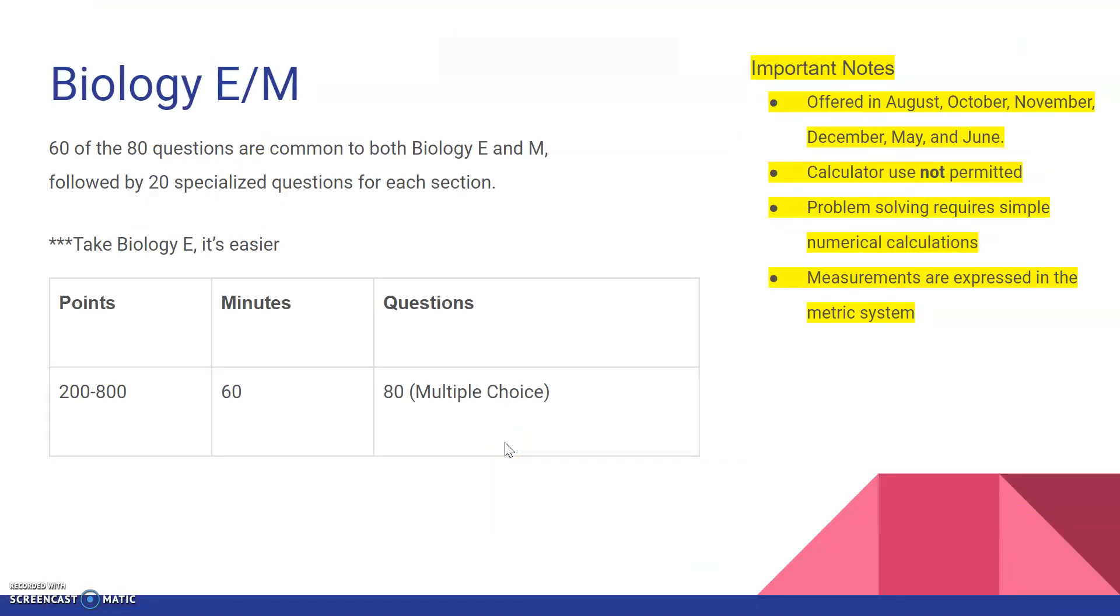Let's start with biology exam. So it's called biology E slash M. There's 80 questions in total, multiple choice. You got 60 minutes. 60 of the 80 questions are common. So they're just biology. You got to do them. And then you got 20 questions specialized for each section. Basically, it's 80 plus 20, which is 100. You do 80 questions, but you have a total of 100 questions on the test. But after the 60 questions, you don't do the 40 questions right after. You're going to have to choose between biology E and M. So there's 20 questions for E, there's 20 questions for M, and you choose which section you want to do.